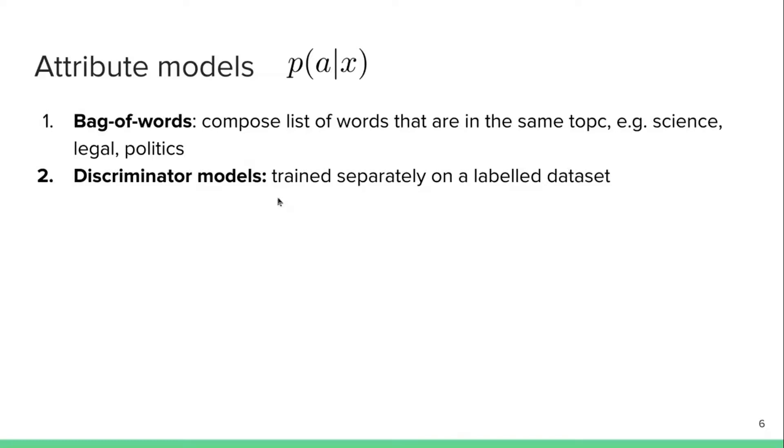They're also testing a discriminator model. This one is basically, you can think of this as a classifier trained separately on auxiliary labeled datasets. For example, for sentiment, you could use a sentiment dataset with a lot of positive or negative sentences to train this attribute model.